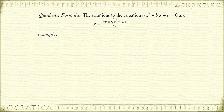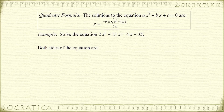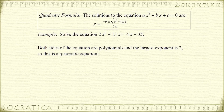For example, let's solve the equation 2x squared plus 13x equals 4x plus 35. Both sides of this equation are polynomials, and the largest exponent is 2, so this is a quadratic equation. That means we can use the quadratic formula to solve this equation.